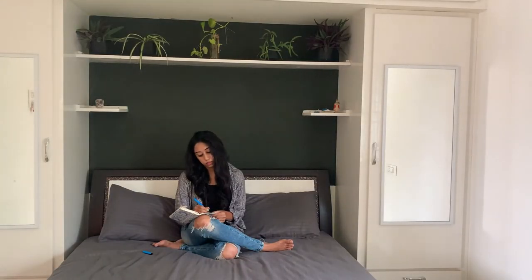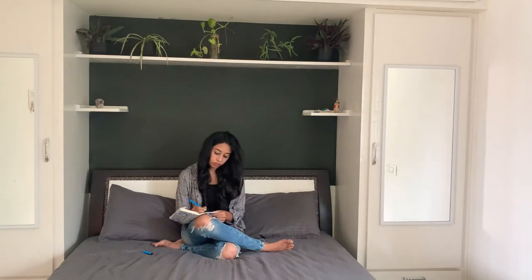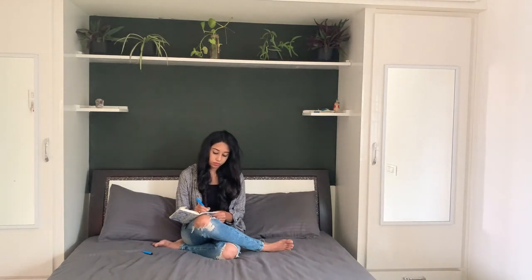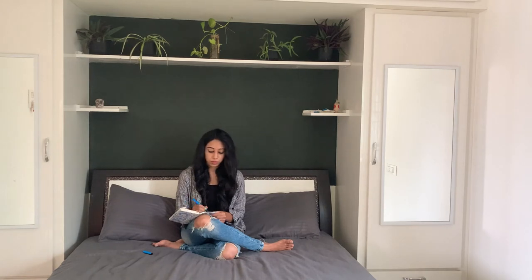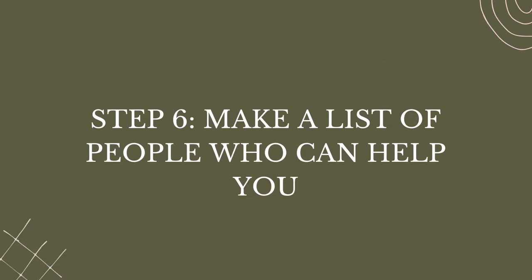Step five: make a to-do list to get there. Once you've decided which goals are most urgent, brainstorm the steps you'll need to take. For example, if you want to move to Canada, the steps would be: prepare for your IELTS exam, book your exam, write your exam, then apply for the immigration programs. Start small with the basics and then get more advanced.